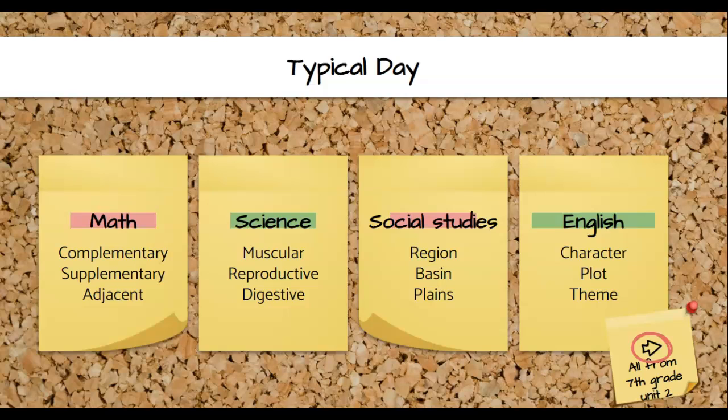So why do we have to focus so much on academic vocabulary and visuals with our students? Let's look at what a typical day is for our student. All of these content area words come from the seventh grade unit two curriculum. Our students go to math where they have to learn the words complementary, supplementary, and adjacent. Not only do they need to learn the words, they need to learn the concept behind the words too. Then they go on to science class where they learn muscular, reproductive, and digestive.